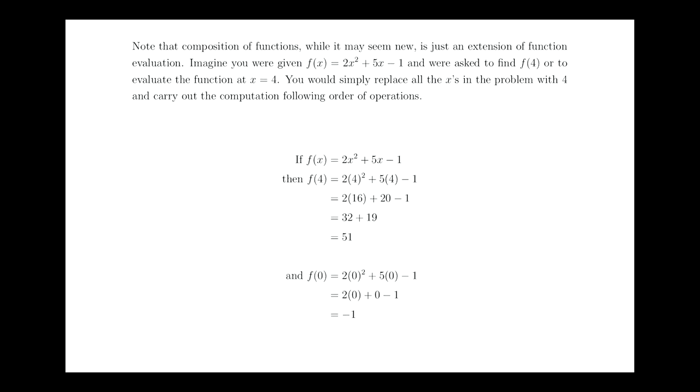For composition of functions, this idea is really just an extension of function evaluation. So let's say you're given this function, f of x equals 2x squared plus 5x minus 1, and you're asked to find what f of 4 was, or another way of asking the same question is to evaluate the function at x equals 4. All you have to do, and you've done this since middle school, is wherever you see an x in the problem, there, there, and there, you replace all those x's with 4's. So mathematically, the proper way to write this is f of x equals our function. f of 4 means wherever we see an x here and here, and here, we replace it with the number 4. And then once you use order of operations, you can simplify this to get 51. So what that means is if we plug 4 into the function as an input, the function will give us 51 as the output.